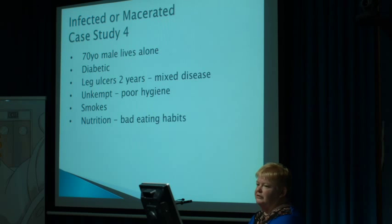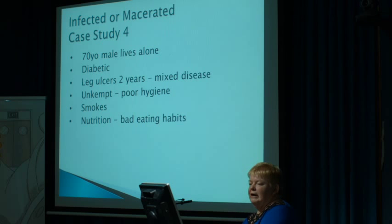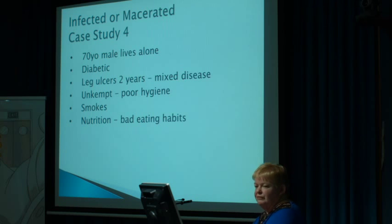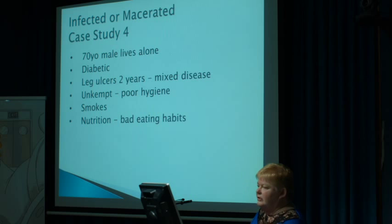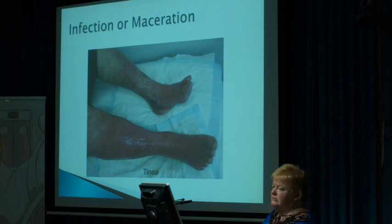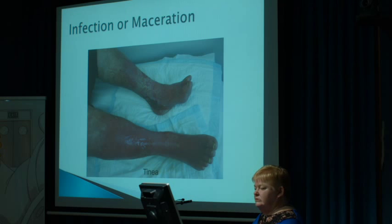This case study involves maceration and infection combined — I'll let you make the decision. He's a 70-year-old male who lives alone, is diabetic, and has had this mixed disease leg ulcer for two years with a small arterial component. He is unkempt, has poor hygiene, doesn't look after himself, smokes, and has poor eating habits — so he's got a lot of things against him already. Looking at the wound, I say one leg has a biofilm probably, and he's also got maceration there. It's very hard to tell the difference — but in fact he has both.